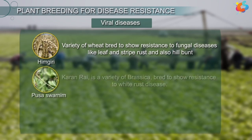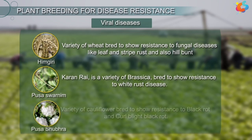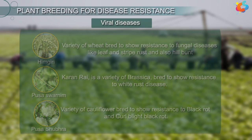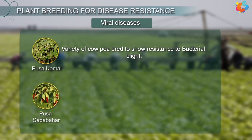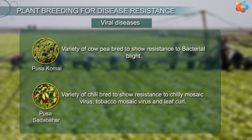Pusaswarnima, also called Karan Rai, is a variety of Brassica bred to show resistance to white rust disease. Pusakomal is a variety of cowpea bred to show resistance to bacterial blight. Pusasadabahar is a variety of chili bred to show resistance to chili mosaic virus, tobacco mosaic virus and leaf curl.